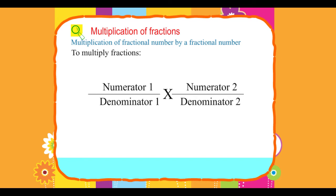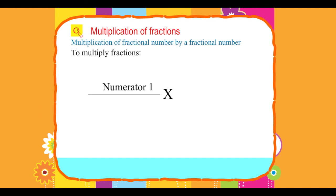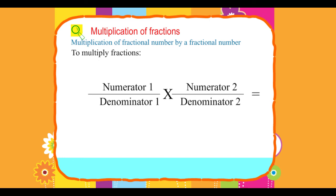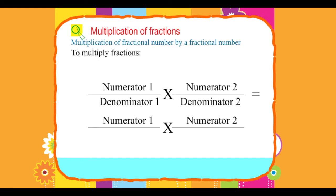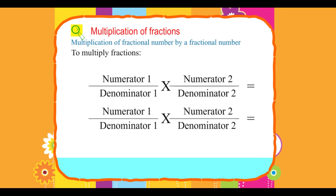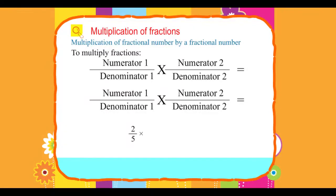Simplify the resulting fraction if required. Thus, numerator 1 / denominator 1 × numerator 2 / denominator 2 = (numerator 1 × numerator 2) / (denominator 1 × denominator 2). For example: 2/5 × 4/7 = (2 × 4) / (5 × 7) = 8/35.